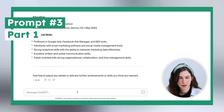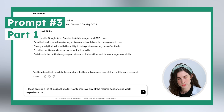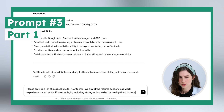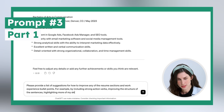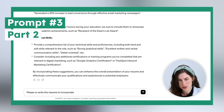Prompt 3, Part 1: 'Please provide a list of suggestions for how to improve any of the resume sections and work experience bullet points — for example, by including strong action verbs, improving sentence structure, highlighting more of my skills, and any other improvements you can think of.' Part 2: 'Please rewrite the resume to incorporate your suggested improvements.'